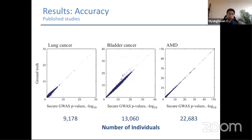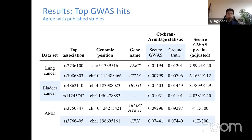We evaluated this pipeline on real GWAS data sets for lung cancer, bladder cancer, and age-related macular degeneration, covering a range of data set sizes from 9,000 to 23,000 individuals. The final GWAS results — shown as p-values measuring the strength of correlation of each genetic variant with disease — are compared between our MPC protocol and the ground truth based on the plaintext data. Across the board, our protocol generates highly accurate output, and the top associations for each data set accurately match the ground truth.